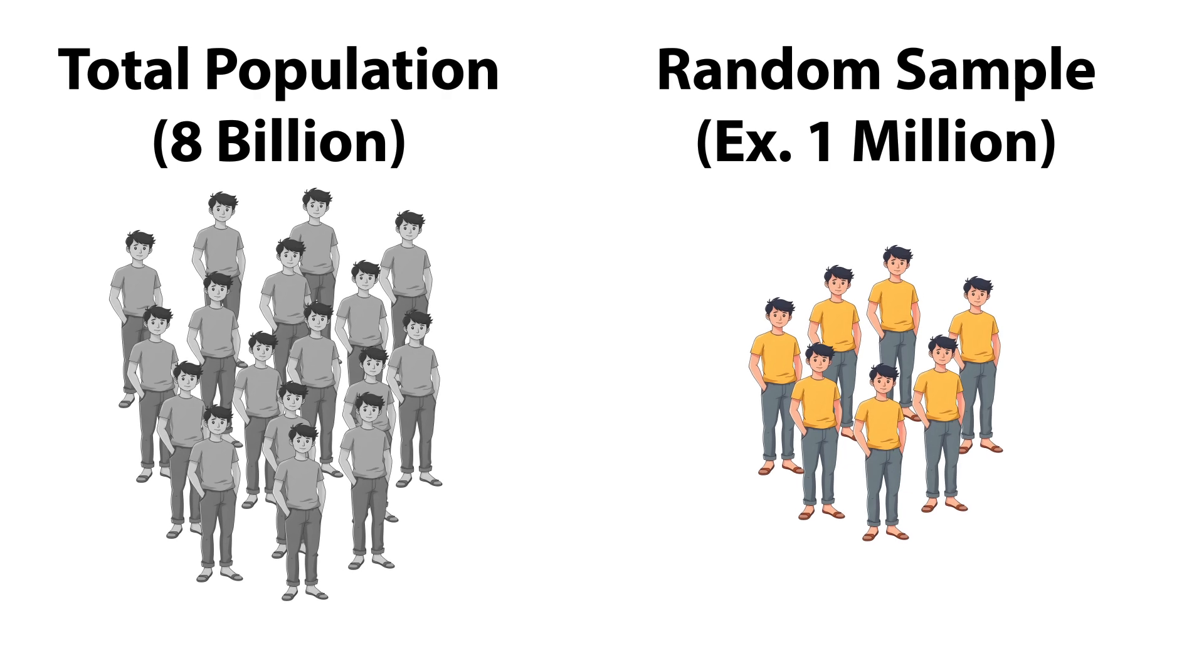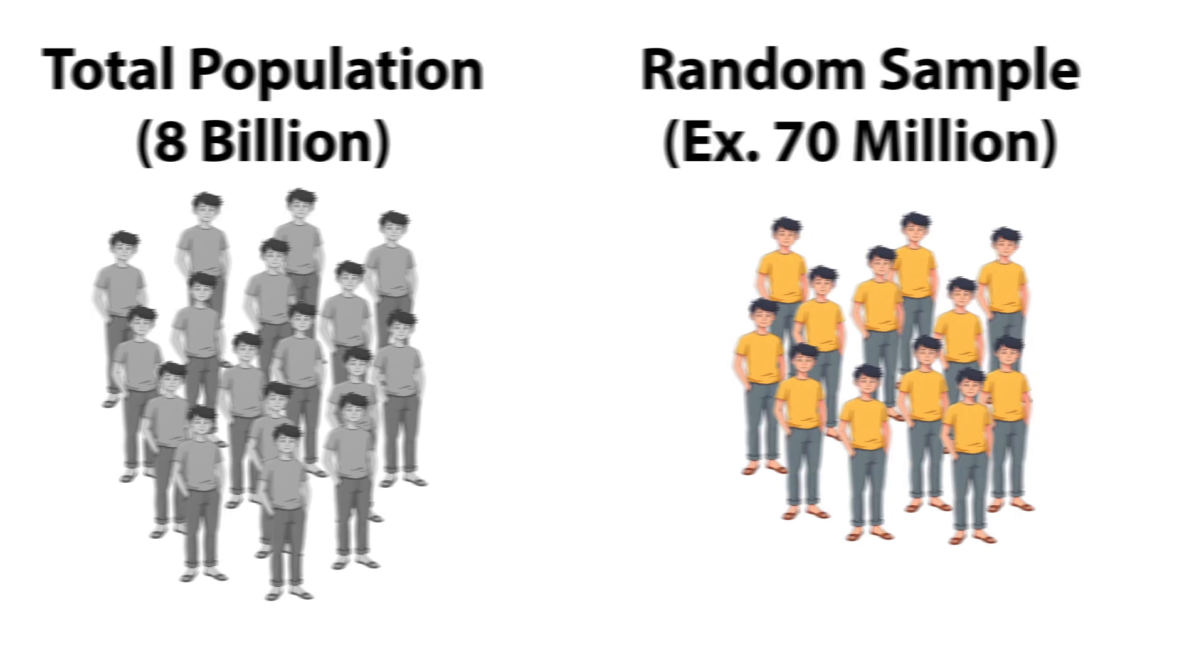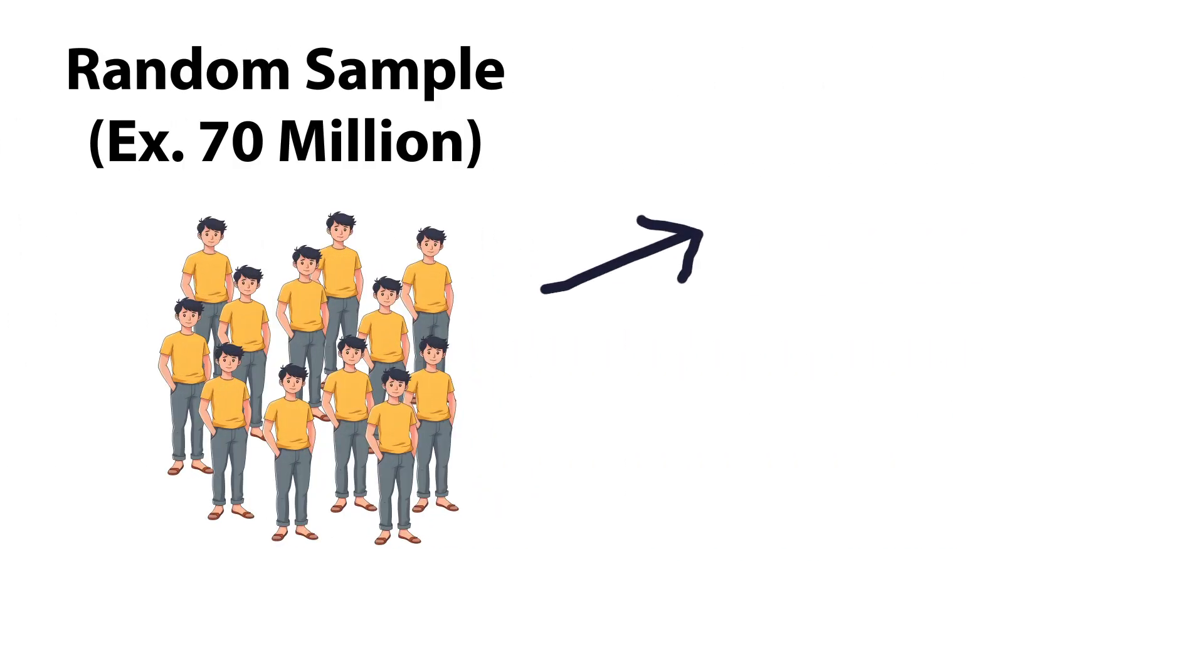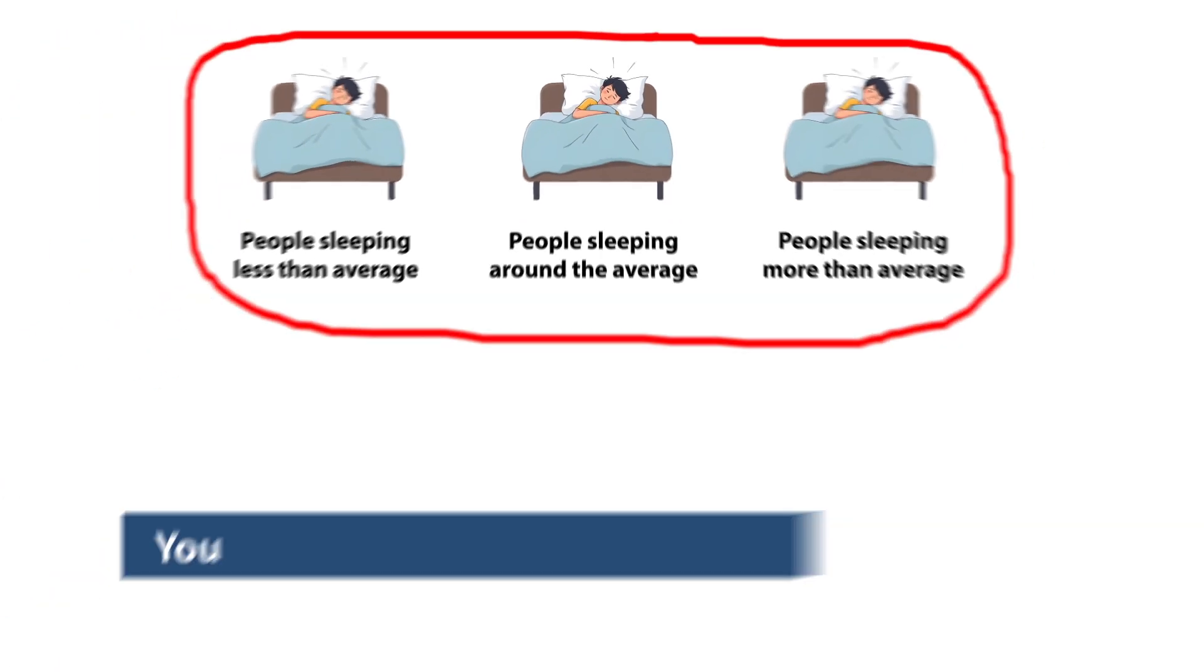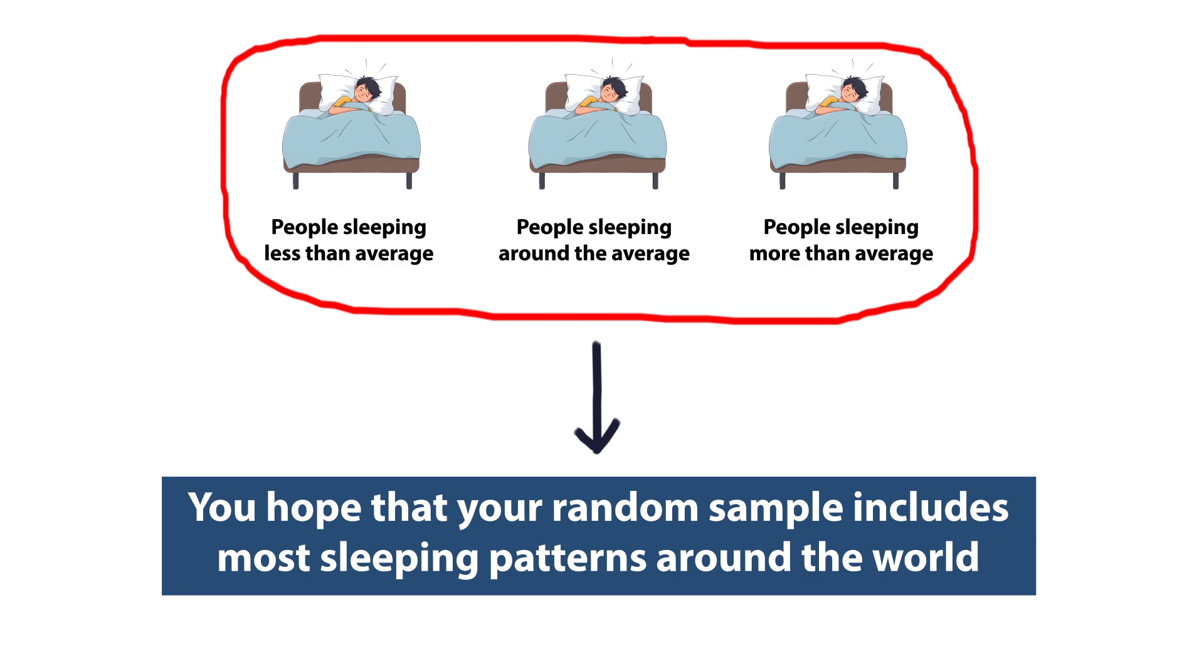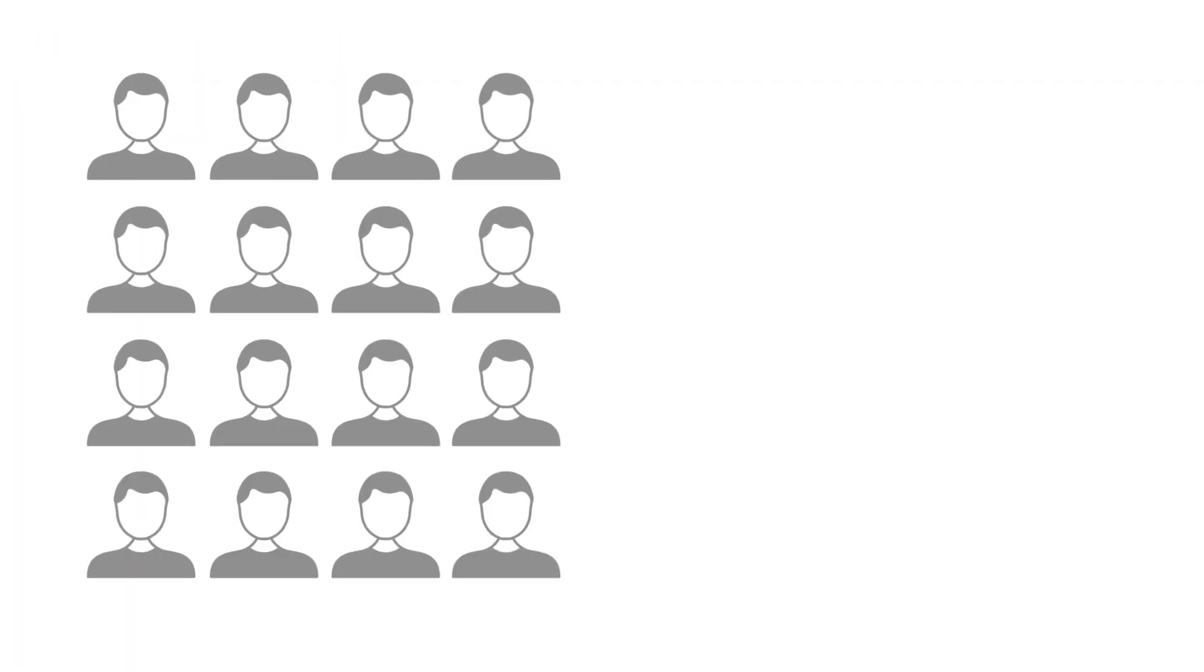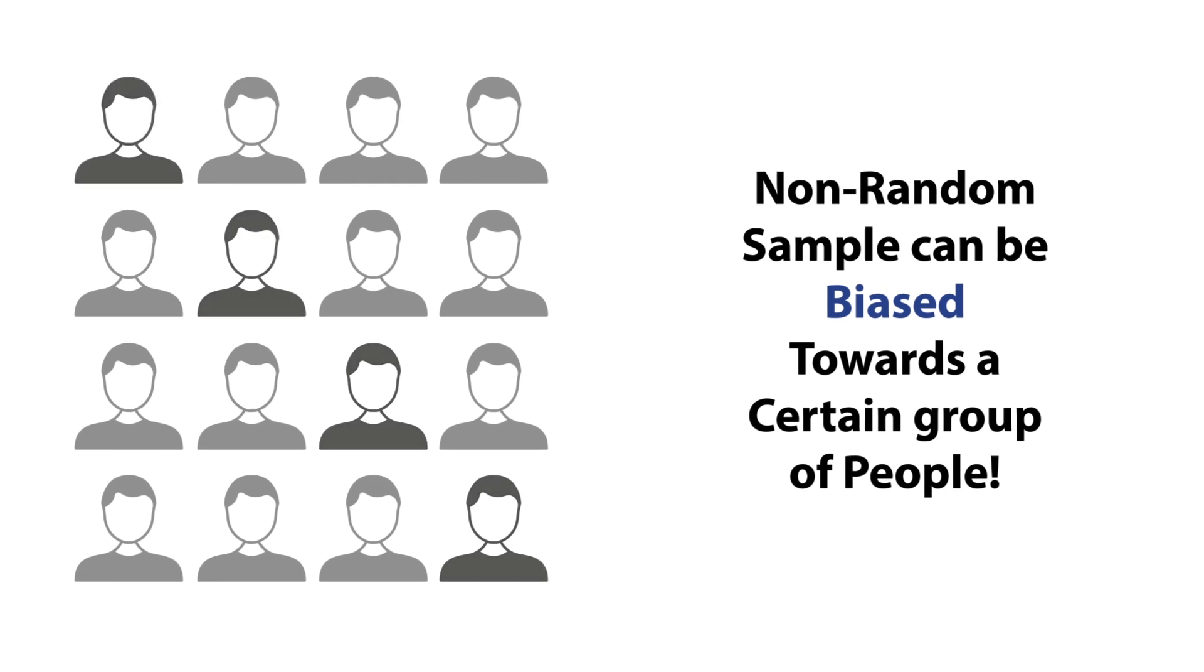Now it should feel natural that the bigger your sample is, the closer you are expected to be to the population. That's true, only if your sample is a random sample and represents the population. A good random sample is expected to cover all or at least the most sleeping patterns in the world. A non-random sample would be problematic and can be biased towards a certain group of people.